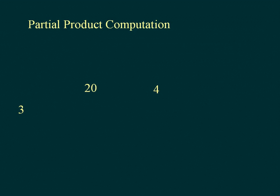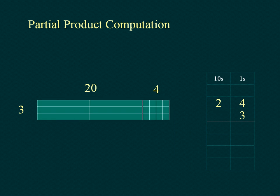Partial Product Computation. Let us multiply the units. 3 multiplied by 4 is equal to 12. Let us multiply the tens. 3 multiplied by 20 is equal to 60. These are partial products. Add the partial products to give the total product.